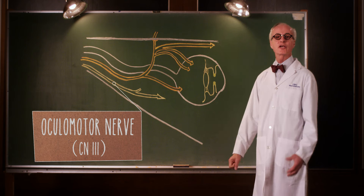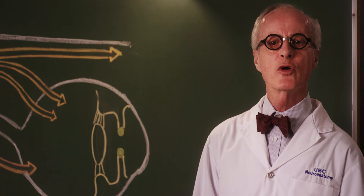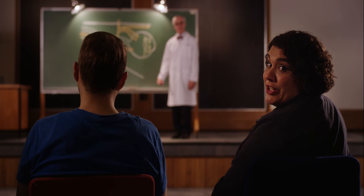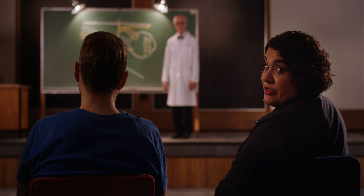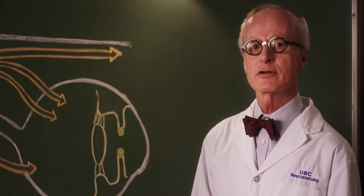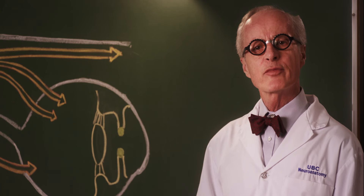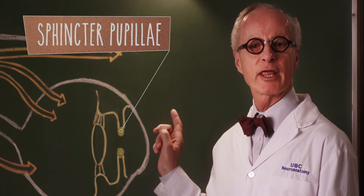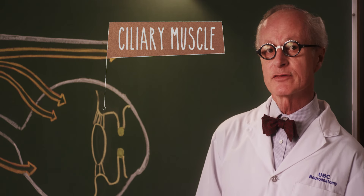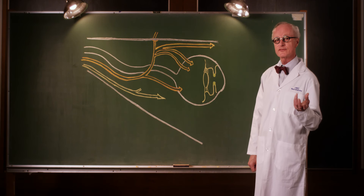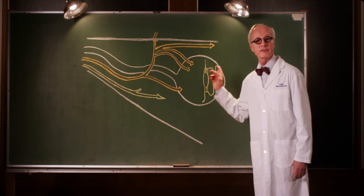This is cranial nerve three, the oculomotor nerve, which carries motor information to most of the muscles that move the eyeball. Cranial nerves four and six also innervate muscles that move the eye, but we're not going to talk about those here. The oculomotor nerve also carries parasympathetic fibers. These fibers will constrict the pupil and need to reach the constrictor pupillae muscle. They also innervate the ciliary muscle that focuses the lens.